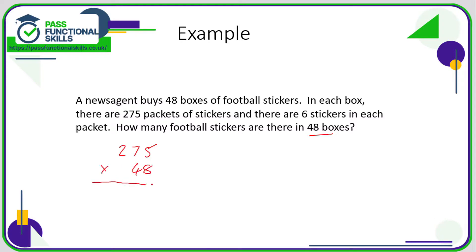Since I've got a three-digit number and a two-digit number, I'm going to put the two-digit number underneath. That way I'm only going to have two lines of working out. If it was the other way around and I put the 275 underneath, I'd have three lines of working out.